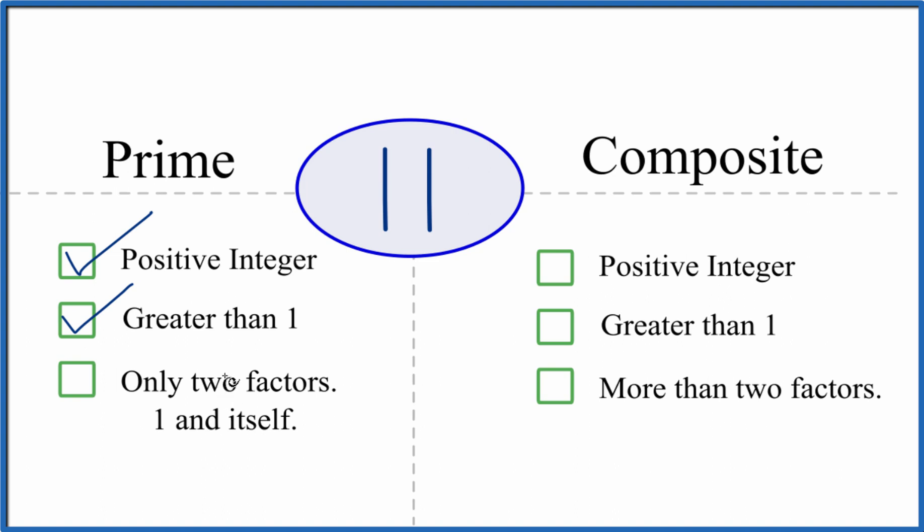The big question for prime numbers is are there only two factors, 1 and itself, 1 and 11, that divide evenly into 11. We know that 1 times 11, that's 11, but are there any other factors that we can divide into 11 evenly? Turns out that there aren't, so there are only two factors. That means that 11 is a prime number.